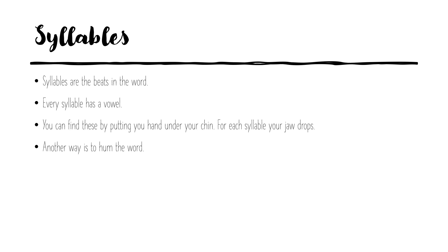Another way is to hum the words. So if you wanted to find how many syllables were in Hippopotamus, you could hum it — and then you can hear that there are five syllables in that. Watch out for the next part of this, which starts to explain the different rules.